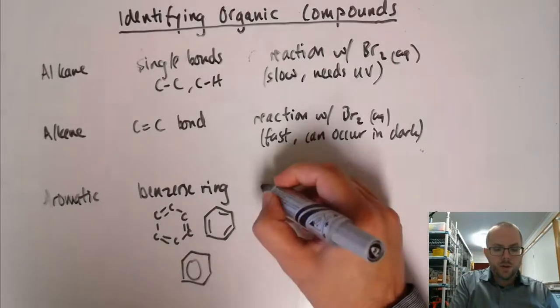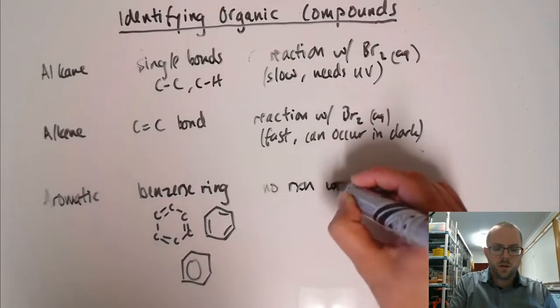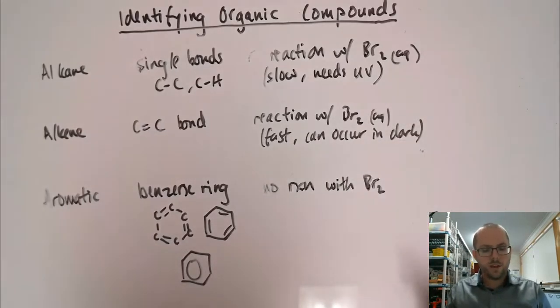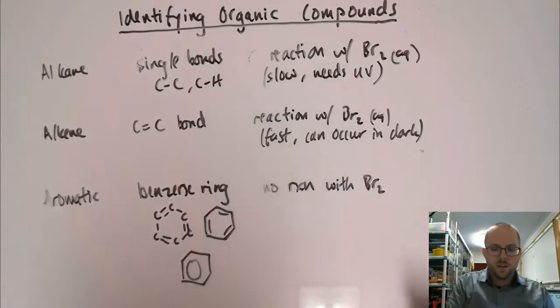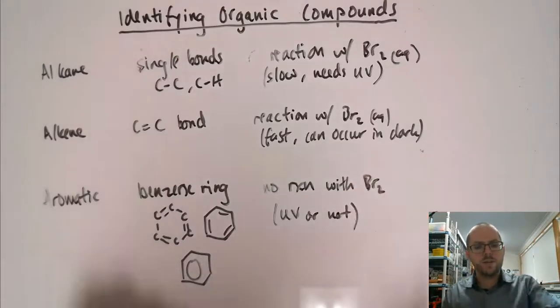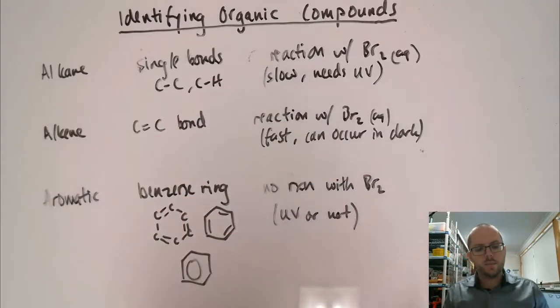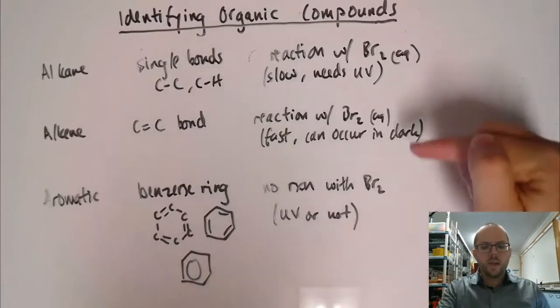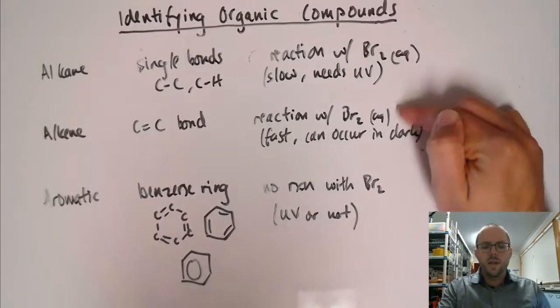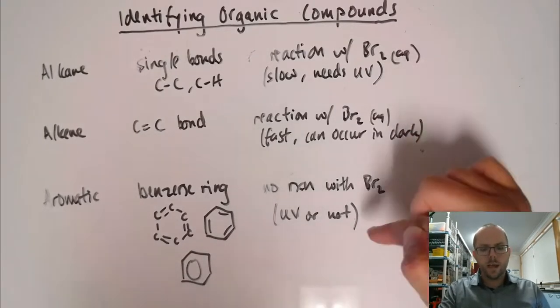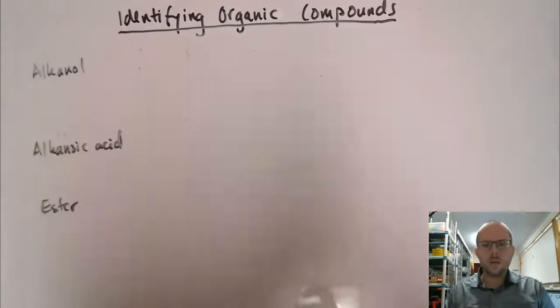There is no reaction with bromine. Even though there's double bonds, they don't react like alkenes do, UV or not. So it doesn't matter. You can distinguish these three substances from one another. If you add all of them to bromine water, the alkene will react instantly in the dark. The alkane will need light in order to react, but it will react. And then the aromatic, the substance that contains benzene ring won't react at all.